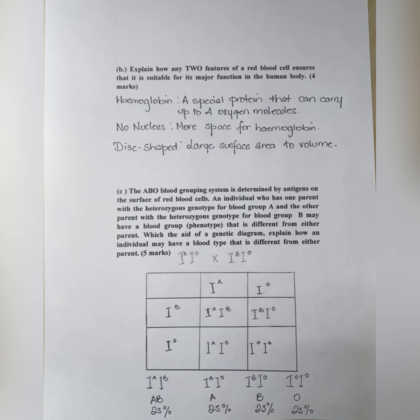And then the last part of this question says, the ABO blood grouping system is determined by antigens on the surface of red blood cells. An individual who has one parent with the heterozygous genotype for blood group A and the other parent with the heterozygous genotype for blood group B